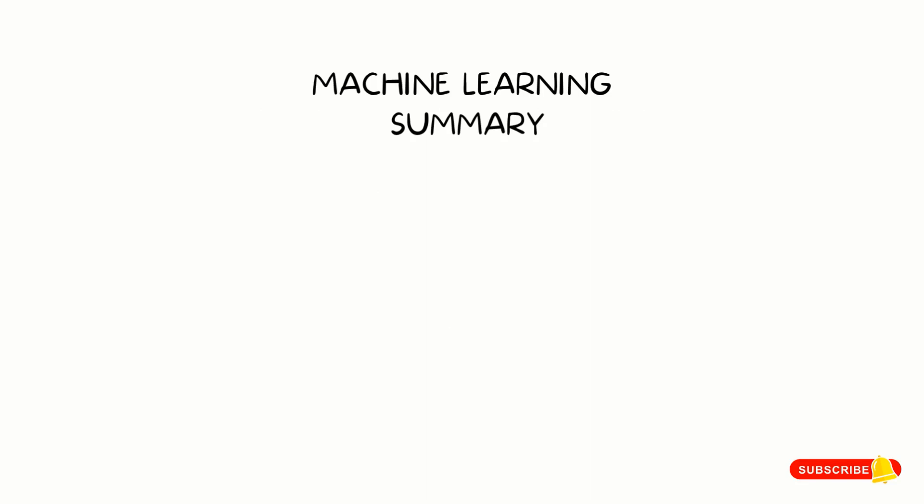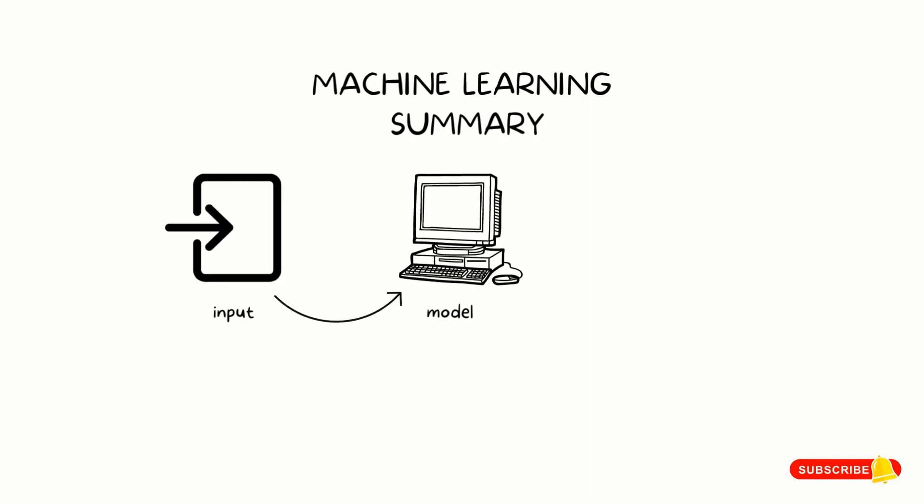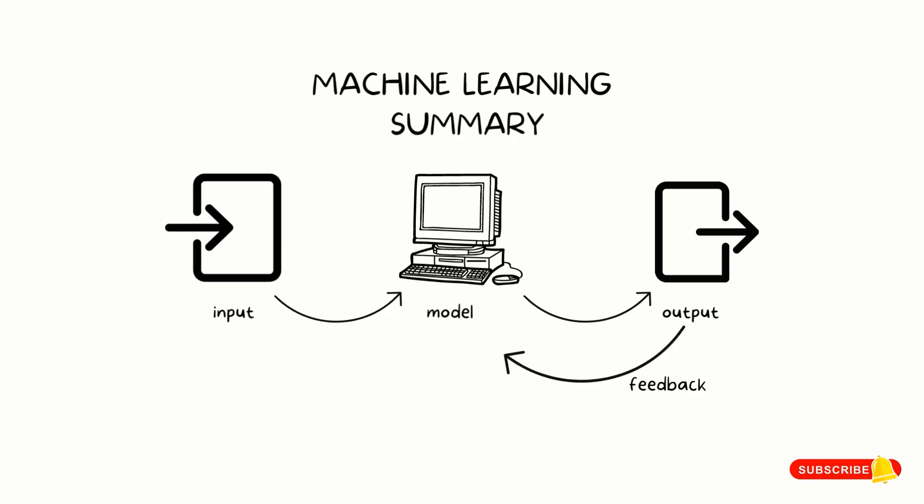To summarize all we said about machine learning, let's use a flow diagram. Input is given to a machine learning model which then produces output according to the algorithm applied. If it is right, we take the output as the final result. If not, we provide feedback to the training model and ask it to predict until it learns.